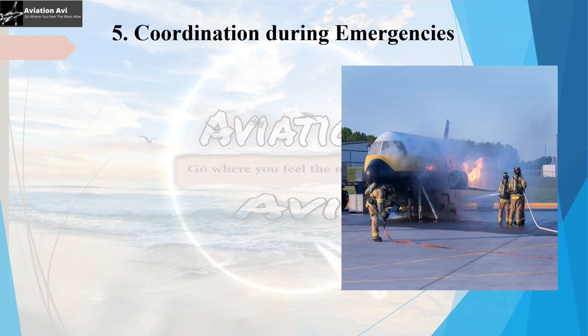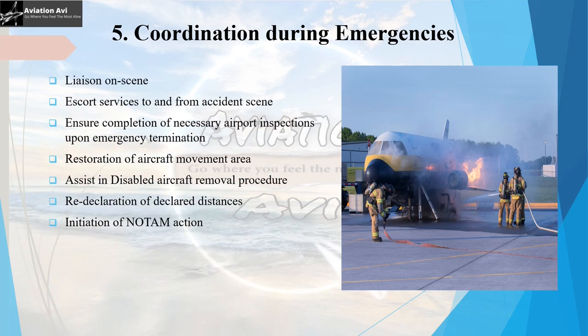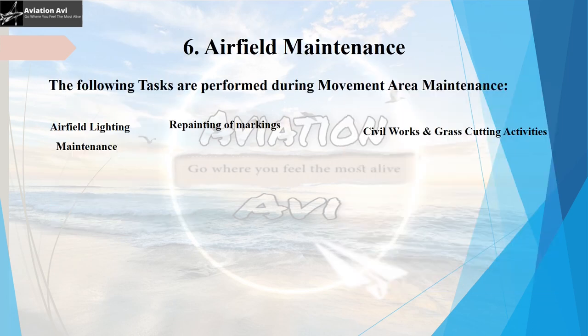The fifth responsibility is coordination during emergencies. The air side operations team liaises on scene of the emergency and escorts vehicles to and from the accident scene. They are also responsible for completing necessary post-emergency inspections upon termination of the emergency, restoration of the aircraft movement area, and assisting in disabled aircraft recovery. They also ensure declared distances are re-declared if required and initiate NOTAM action for the same.